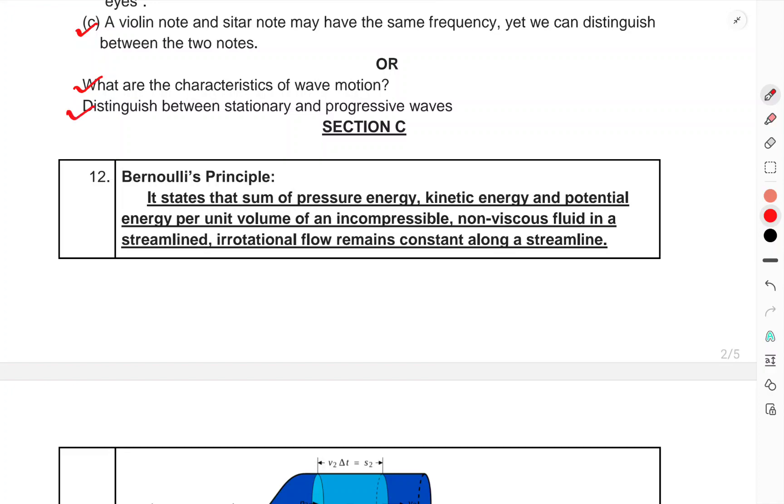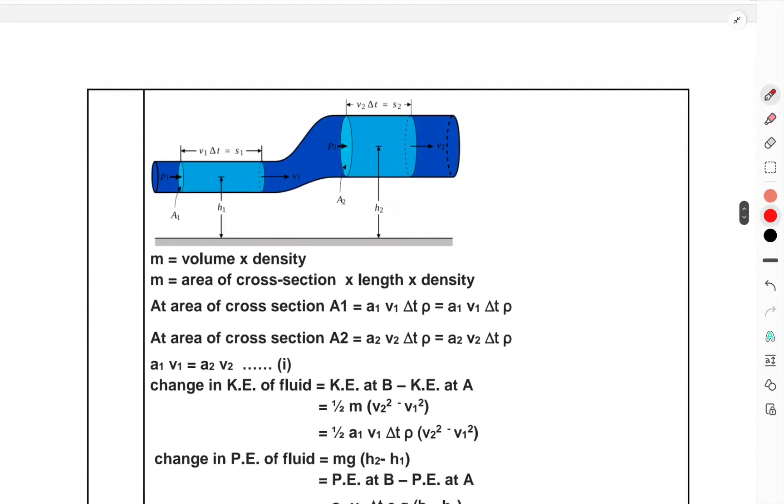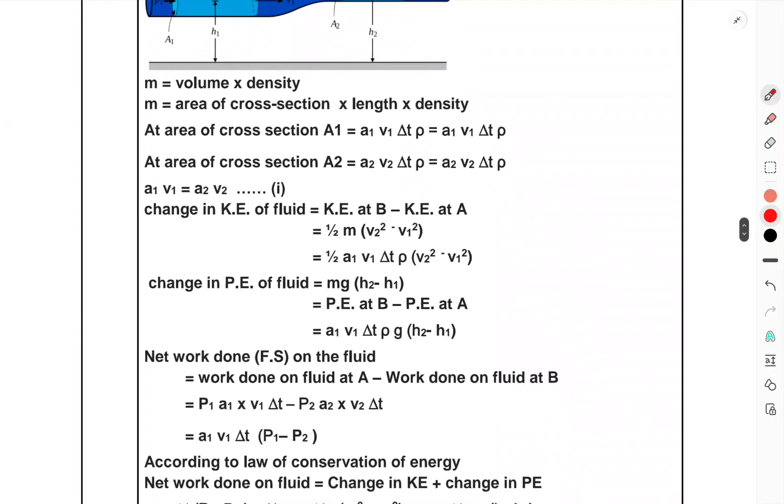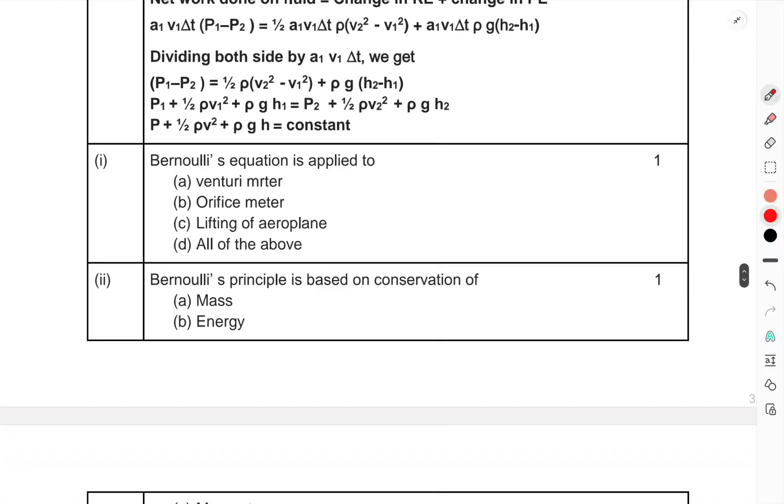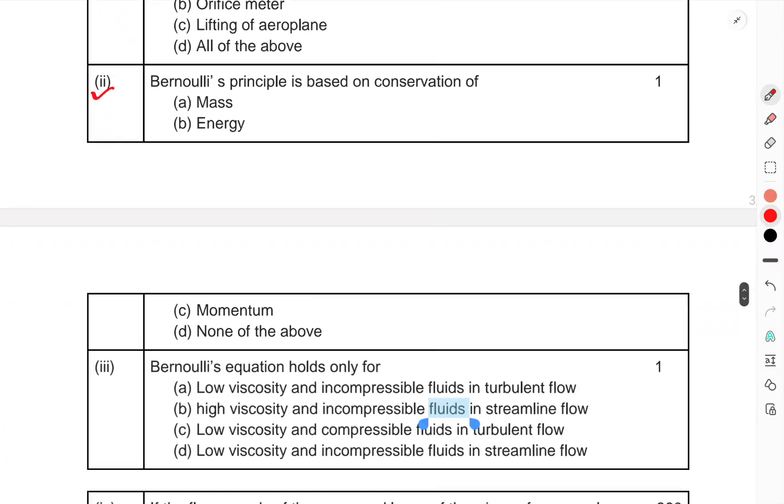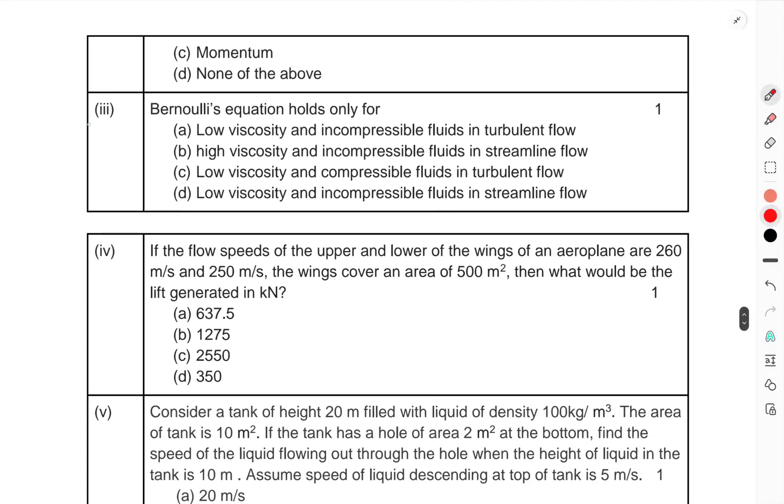Section C: Question 12, Bernoulli's Principle. It states that sum of pressure energy, kinetic energy, and potential energy per unit volume of an incompressible, non-viscous fluid in a streamlined, irrotational flow remains constant along a streamline. Bernoulli equation is applied to this. Bernoulli principle is based on the conservation of energy. Bernoulli equation holds only for...